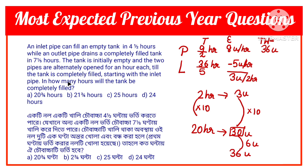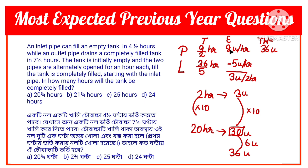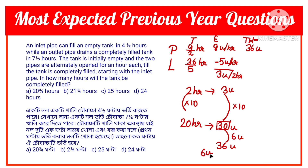Since it is given that we start with the inlet pipe, the inlet pipe will handle the remaining work. There are 6 units left, and the inlet pipe fills at 8 units per hour. So time = 6 units ÷ 8 units per hour = 6/8 = 3/4 hour.